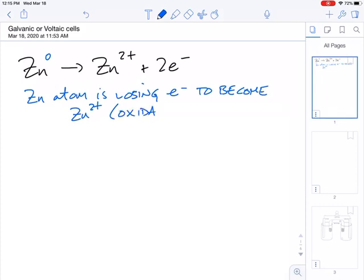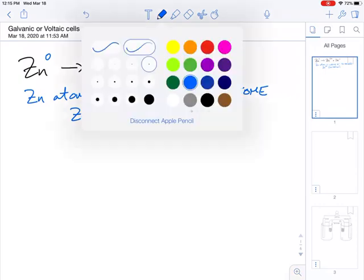What I would want you to take away from this is that the zinc atom is losing electrons to become zinc 2+. Now whenever you're losing electrons, that's called oxidation.